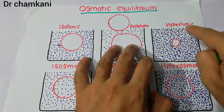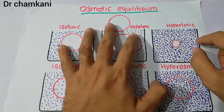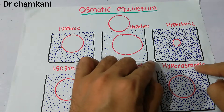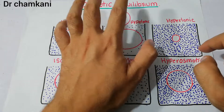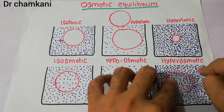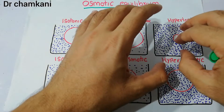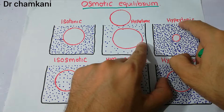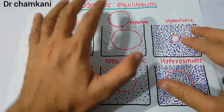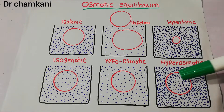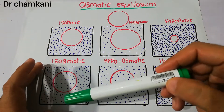The same logic applies to hypertonic versus hyperosmotic fluid. In hypertonic fluid, water can go out but the solute inside the cell cannot go out, so only water exits and the cell shrinks. In hyperosmotic fluid, the concentration of fluid outside the cell is higher than inside, but here the solute inside the cell can also go out. As soon as the solute goes out, osmotic equilibrium is achieved, no movement of water occurs, and the cell size remains the same.